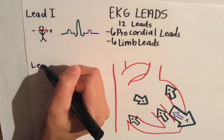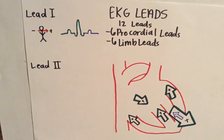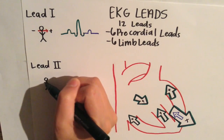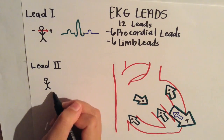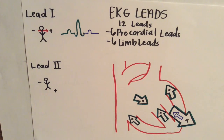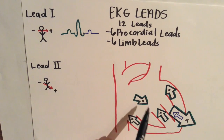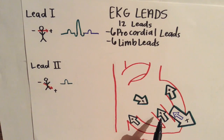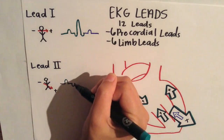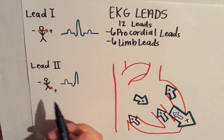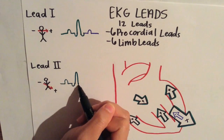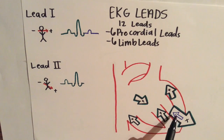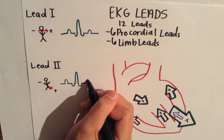Let's look at Lead 2. In Lead 2, the positive electrode is on the left leg and the negative is on the right arm. The atrial depolarization moves towards the positive electrode, giving an upright wave. The intraventricular septum moves away towards the negative, giving a downward wave. Our strong positive ventricular depolarization moves towards the positive, giving a strong upright wave. Then our bases are moving away, giving a downward deflection. Lastly, we have our repolarization moving towards a negative, giving an upright wave.